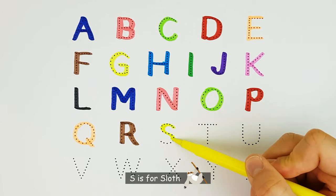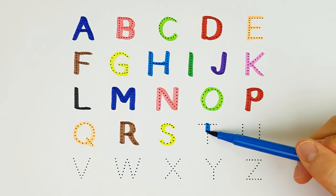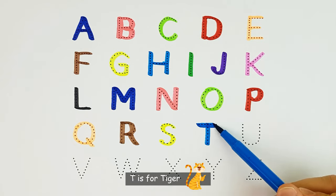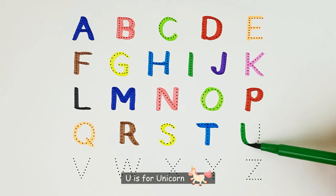S. S is for Sloth. S. T. T is for Tiger. T. U. U is for Unicorn. U.